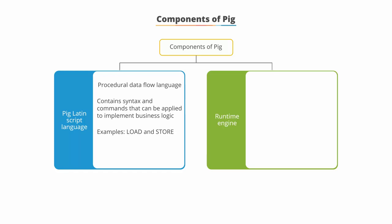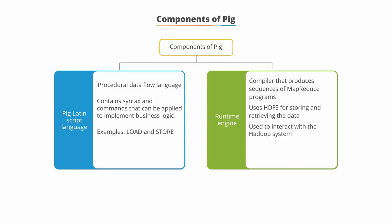The runtime engine is a compiler that produces sequences of MapReduce programs. It uses HDFS to store and retrieve data, and is also used to interact with the Hadoop file system — that is, HDFS and the MapReduce flows. The runtime engine parses, validates, and compiles the script operations into a sequence of MapReduce jobs.